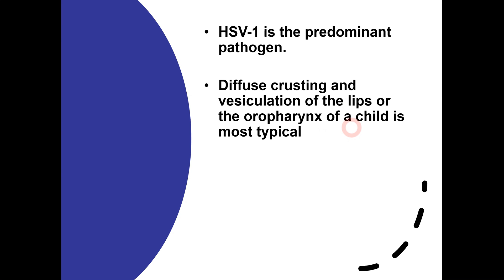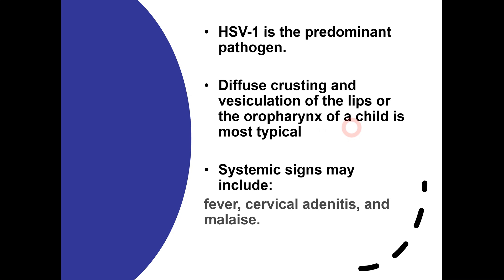Along with the local symptoms discussed, certain systemic features are also appreciated in some severe cases. For example, patients can develop fever, cervical lymphadenitis — inflammation of the cervical lymph nodes — and malaise as well. In some severe cases, systemic signs can also be appreciated.